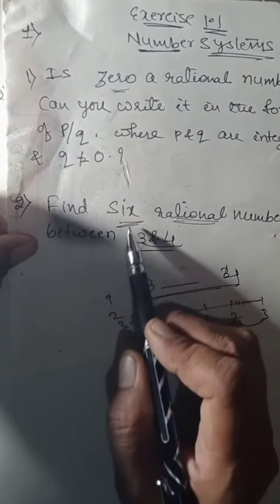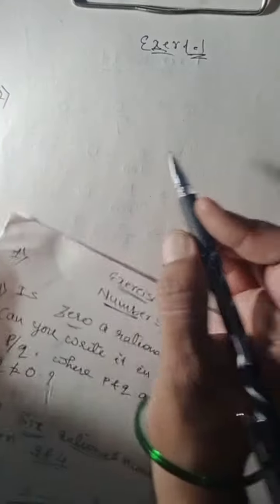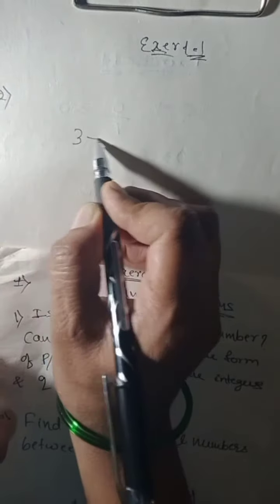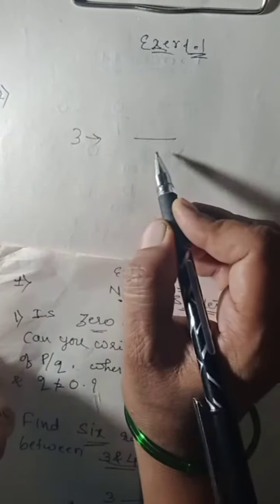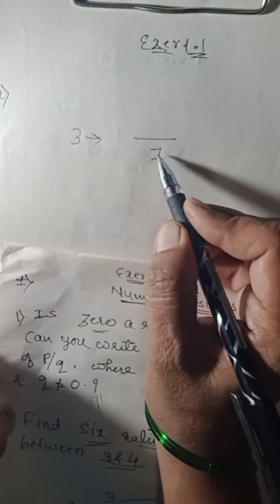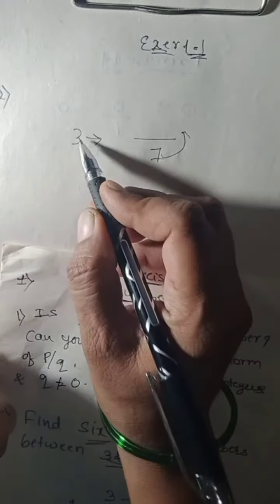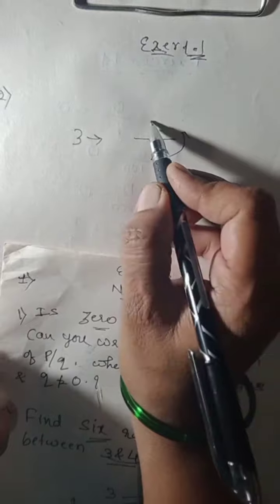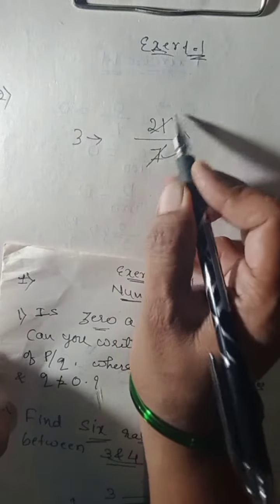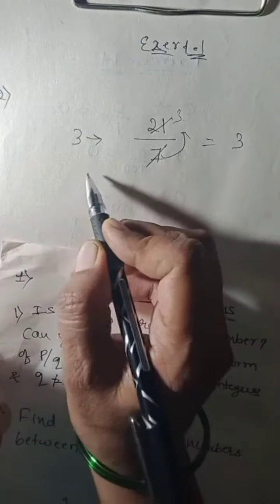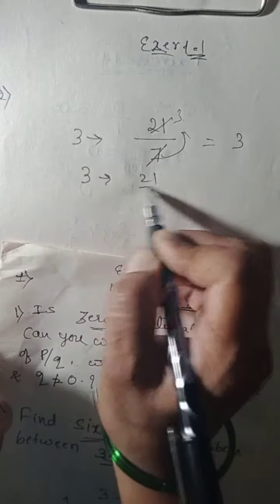The method to find this is very easy. I am writing 3 in the form of a fraction. I am taking 7 in the denominator. 7 times 3 is 21. When I divide this, I'm going to get 3. That means 3 can be written as 21 upon 7.